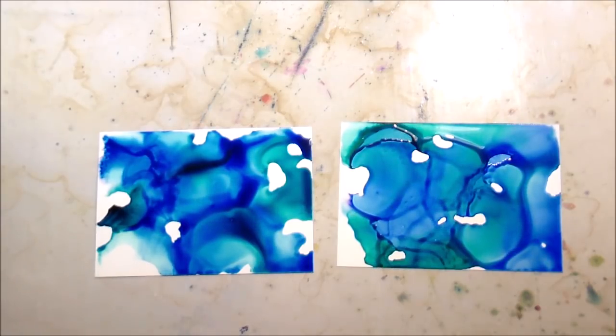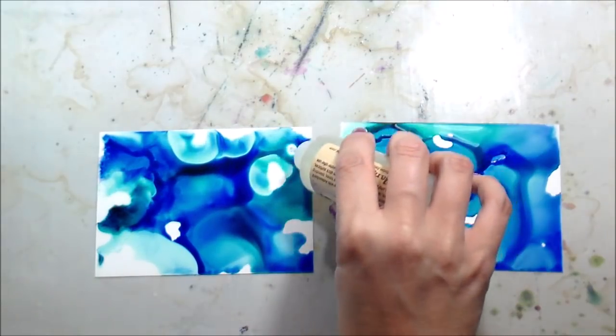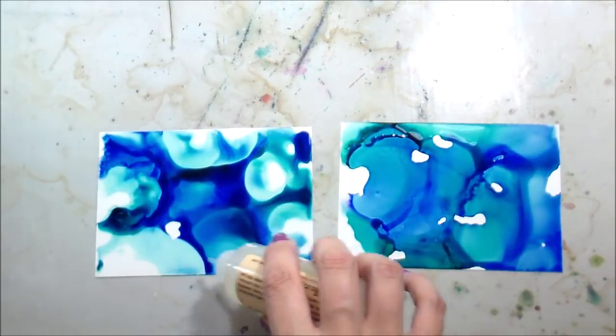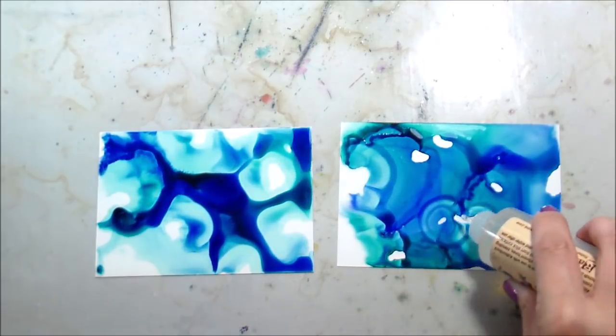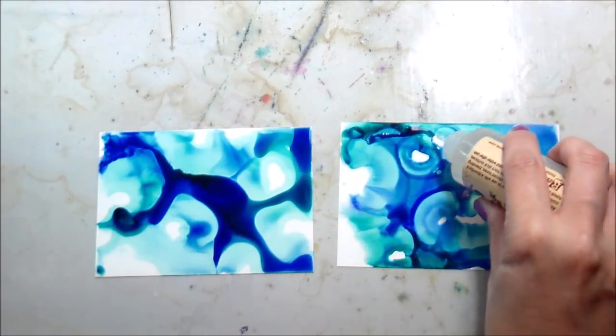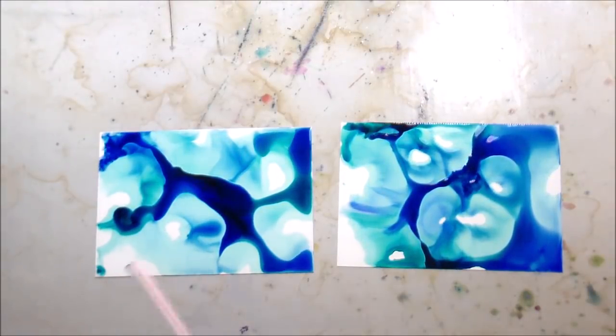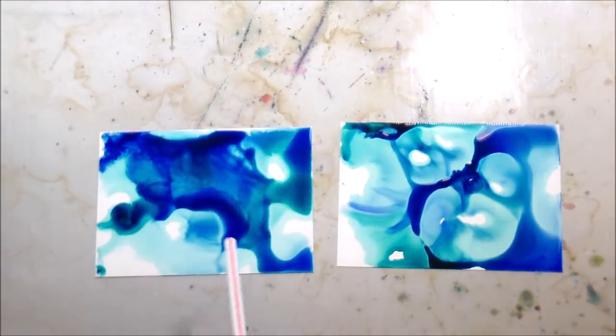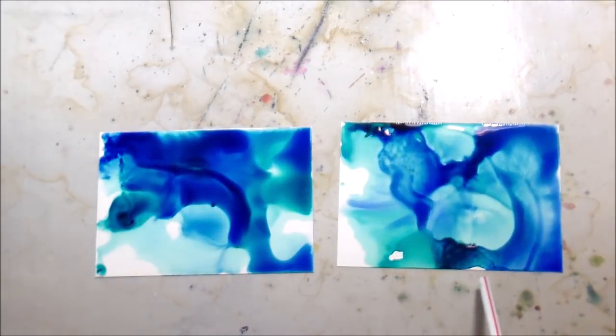So I'm using a straw just to kind of move this around so that I can get a full background out of it. And I'm just going to add more mixative and more ink as I need it to cover up both of my pieces. One of the super fun things about alcohol ink backgrounds is you can just keep playing with it until you're happy. Like there isn't a right or wrong way. There isn't too much or too little.